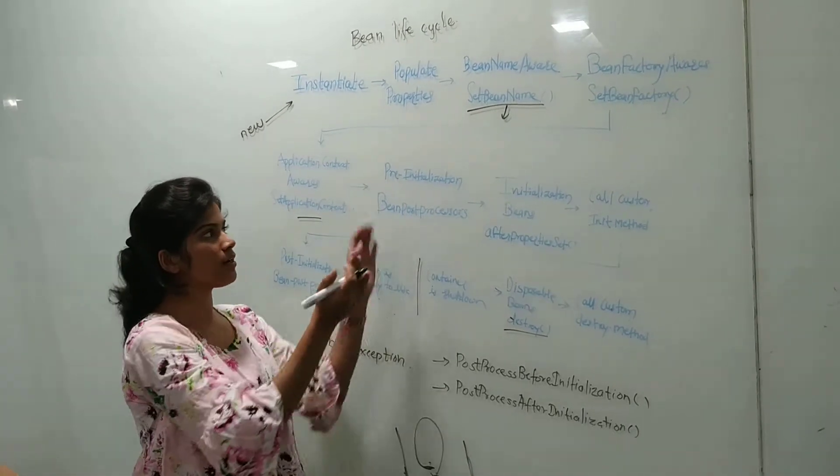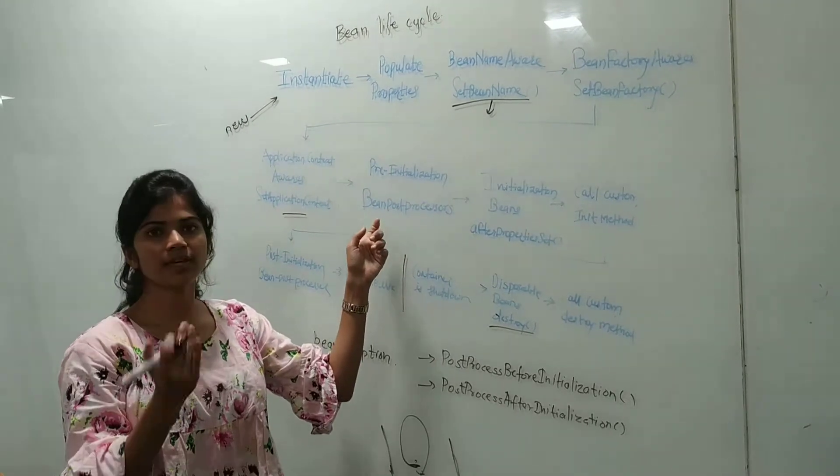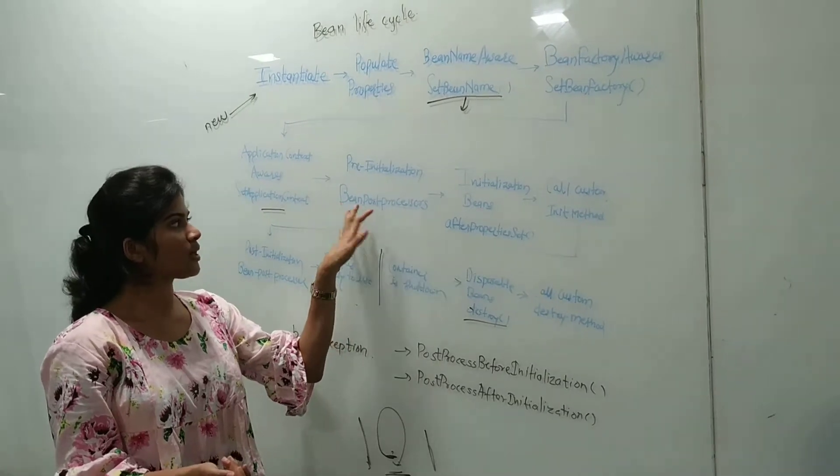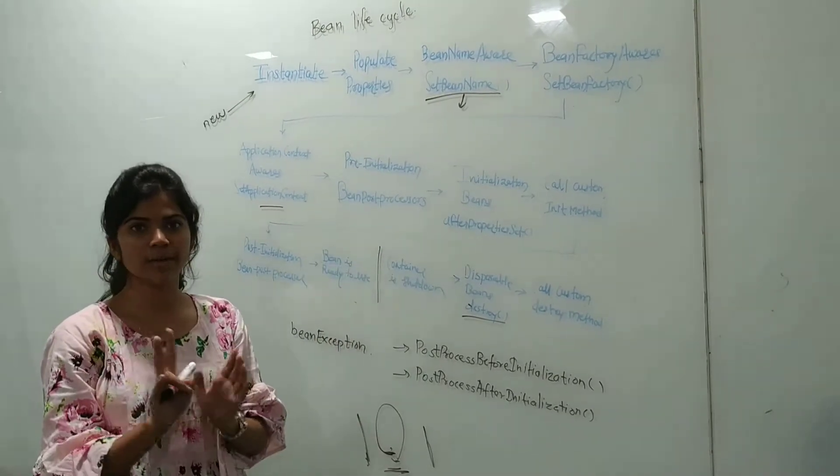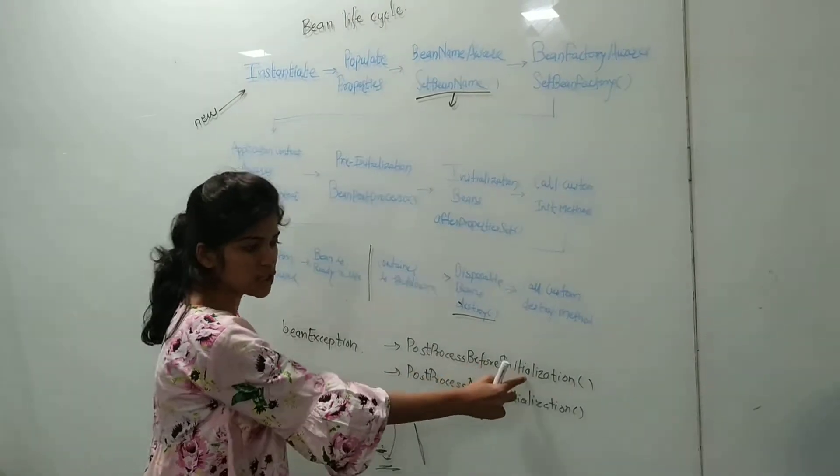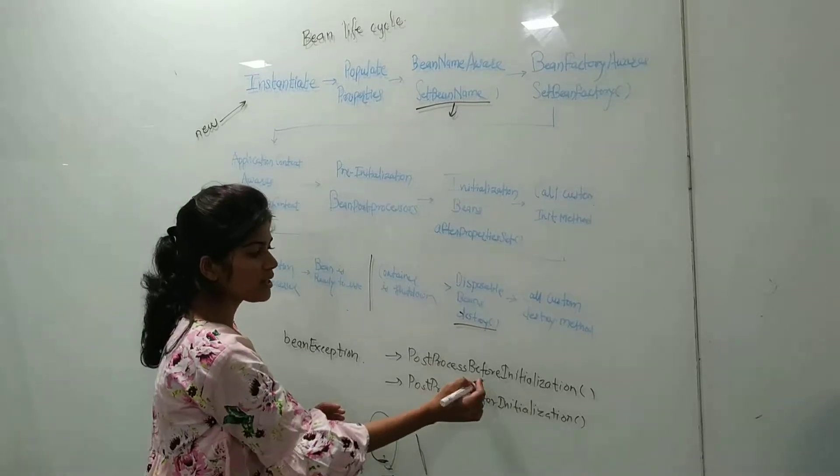During the pre-initialization, if we are implementing it, we will get the override method as BeanPostProcessor. There are two types of bean post-processor: post-process before initialization and post-process after initialization.